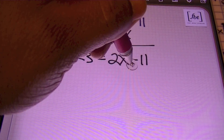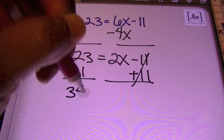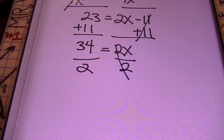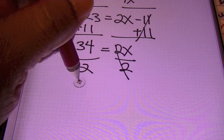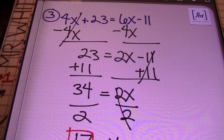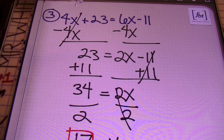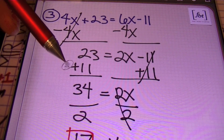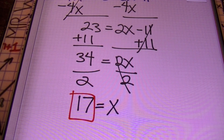I add 11 to both sides of the equal sign, and my 11s cancel out on the right side. I bring down 34, which equals to 2X. Then using the division principle, I divide both sides by 2. Remember, a fraction is a division problem, so 34 over 2 equals 17. So X equals 17 — that is my answer. We moved all variables to one side because I preferred a positive coefficient.